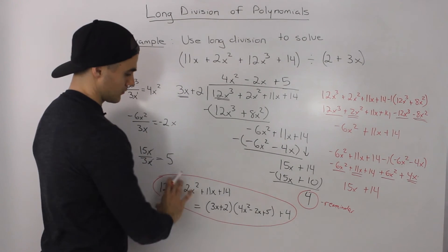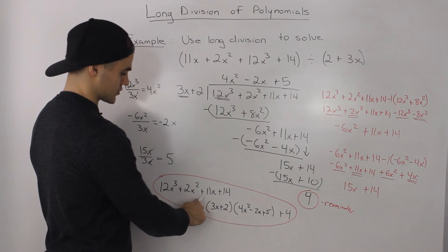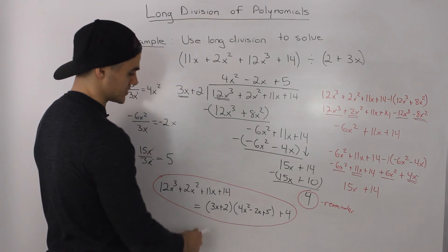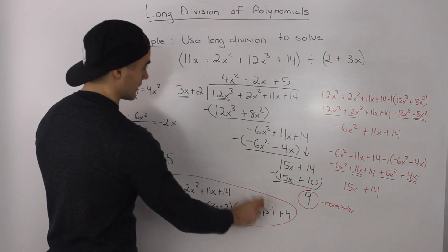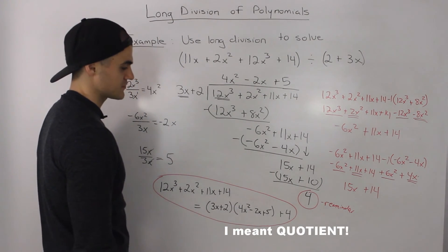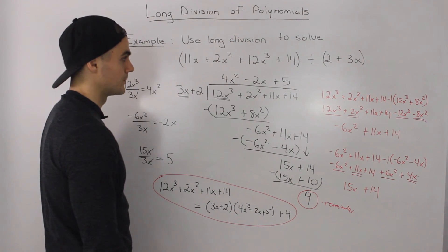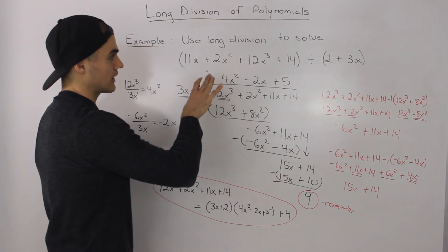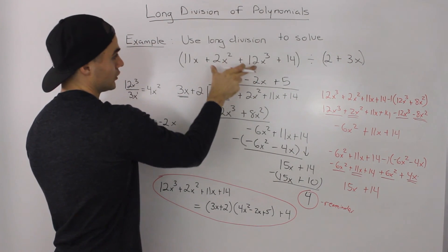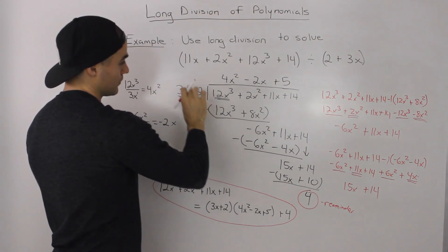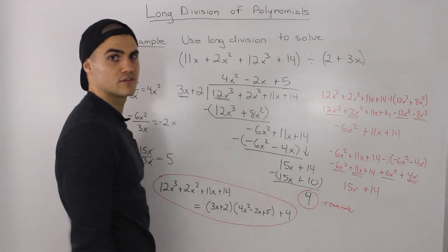Taking our result and rewriting it into a nice division statement: the dividend 12x cubed plus 2x squared plus 11x plus 14 equals the divisor 3x plus 2, times the quotient 4x squared minus 2x plus 5, plus our remainder of 4. The biggest trick in this example was rearranging the original polynomials from highest degree to lowest degree before performing the division.